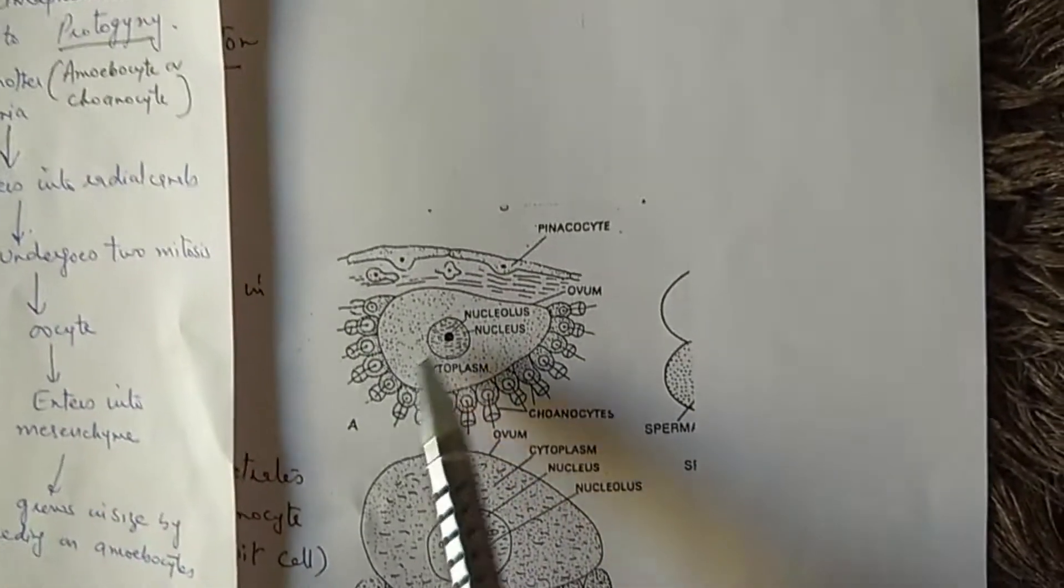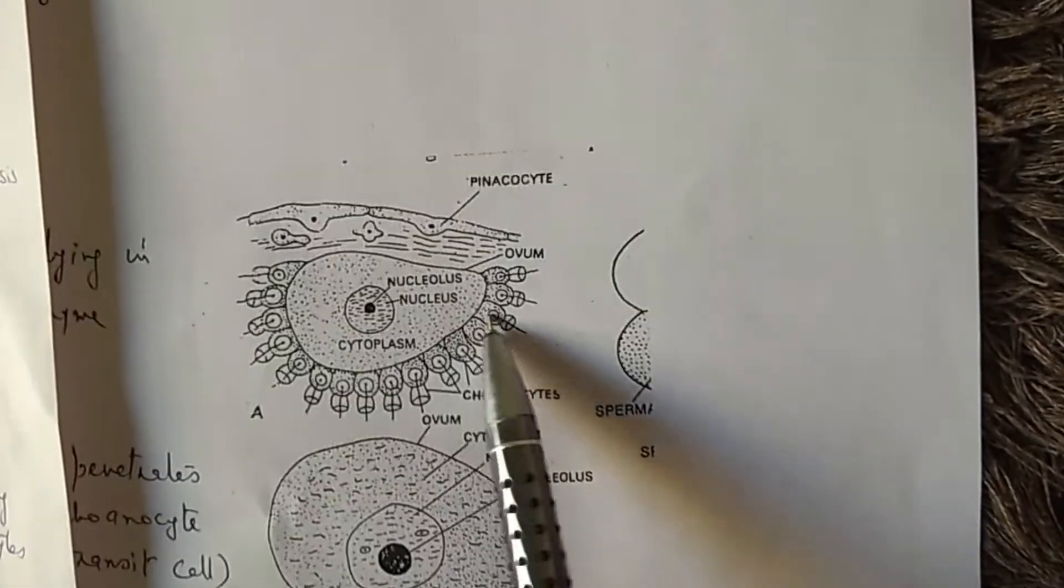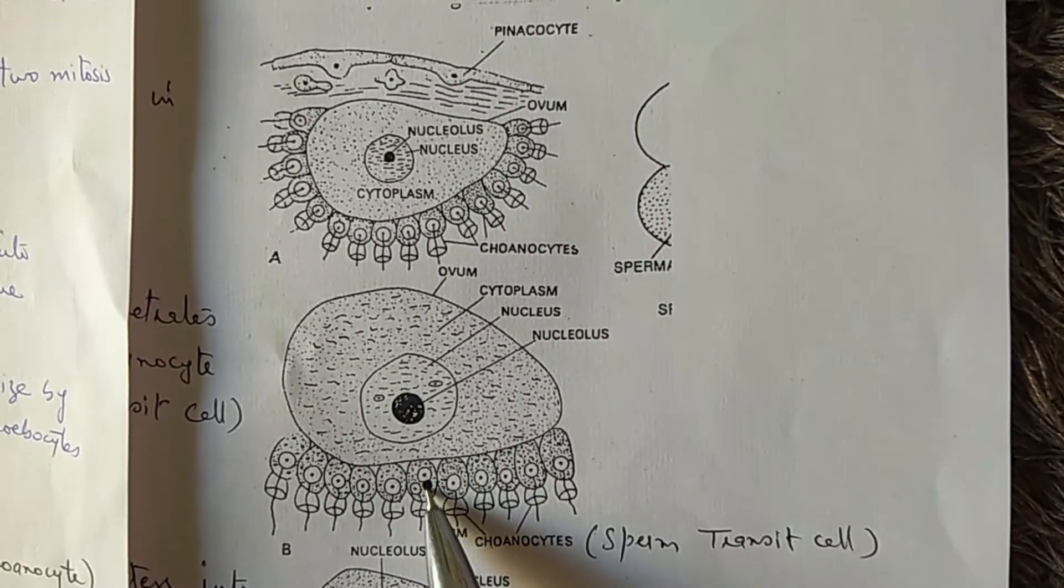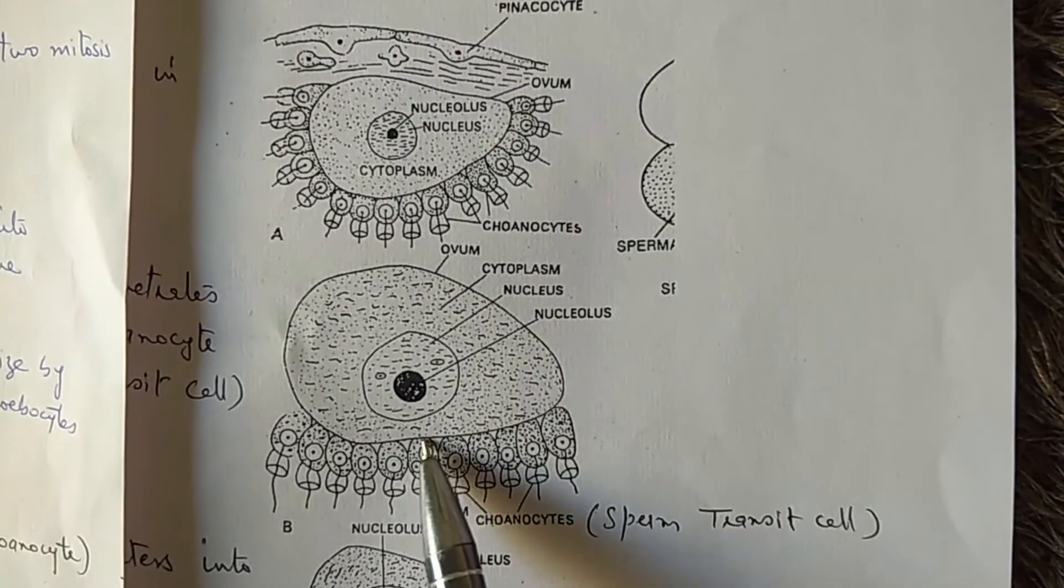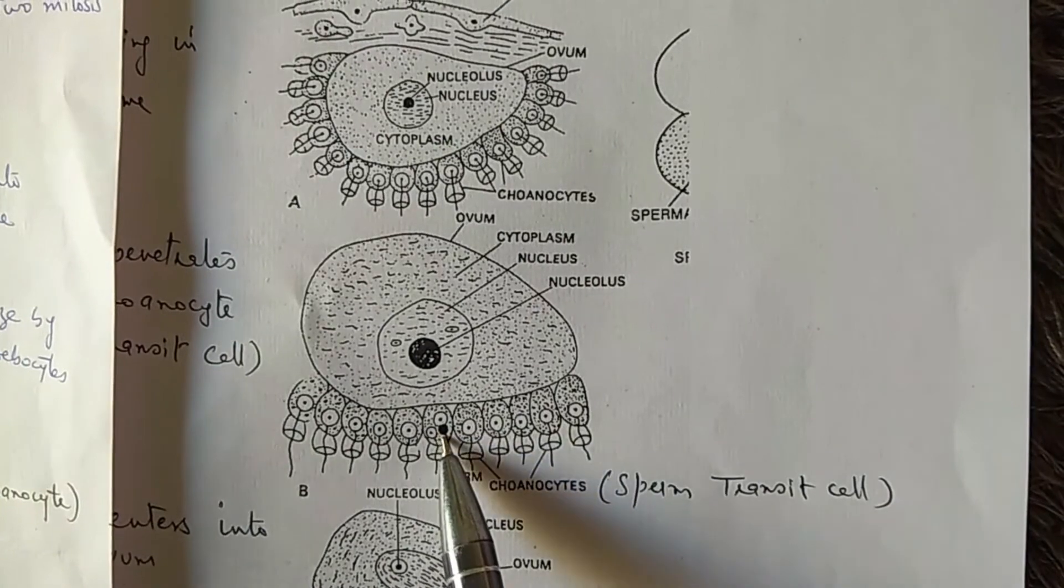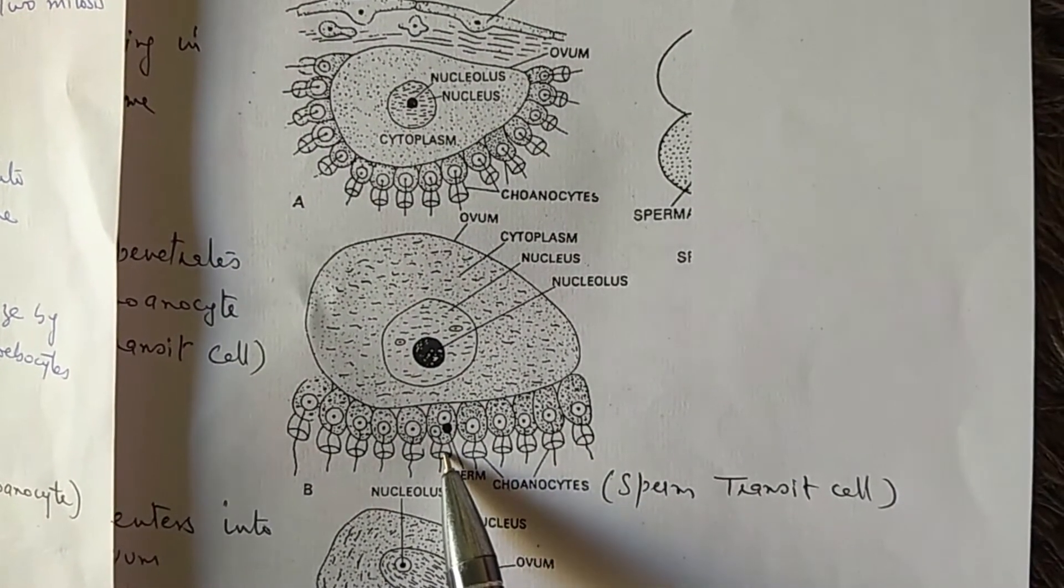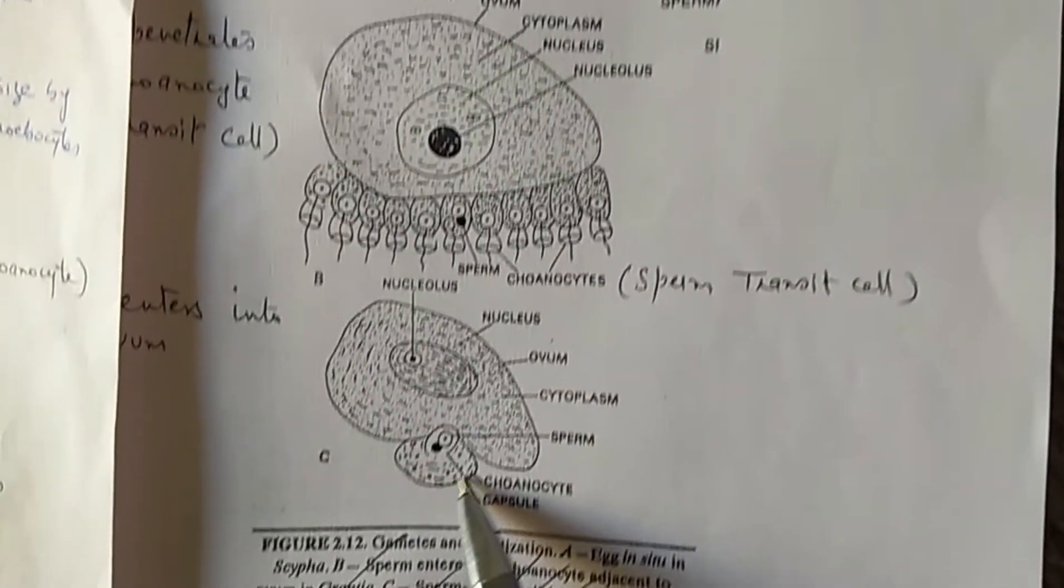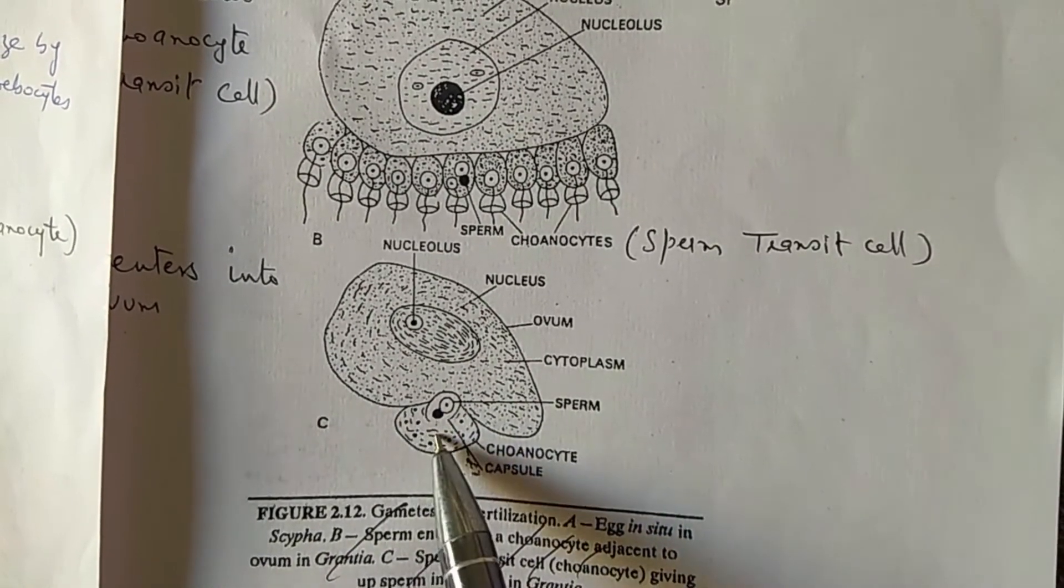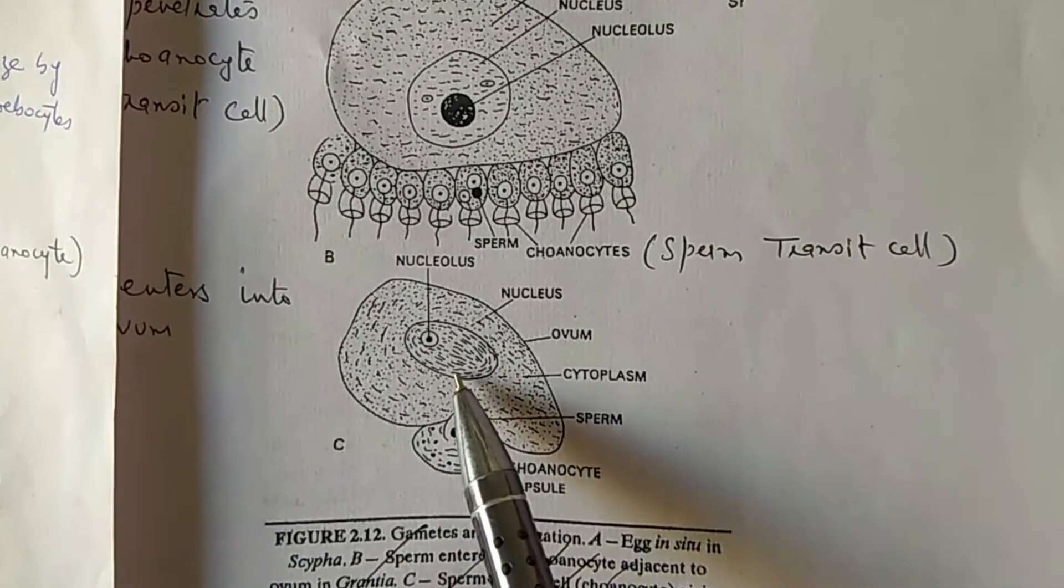The egg was lying in the mesenchyme and this is the choanocyte layer. When the sperm enters into radial canal, it penetrates the choanocyte. The choanocyte which is penetrated by the sperm is known as sperm transit cell. This choanocyte loses its flagellum and collar and becomes amoeboid in shape. The egg develops a small depression to receive this sperm transit cell, and then the sperm transit cell transfers the sperm into the egg.